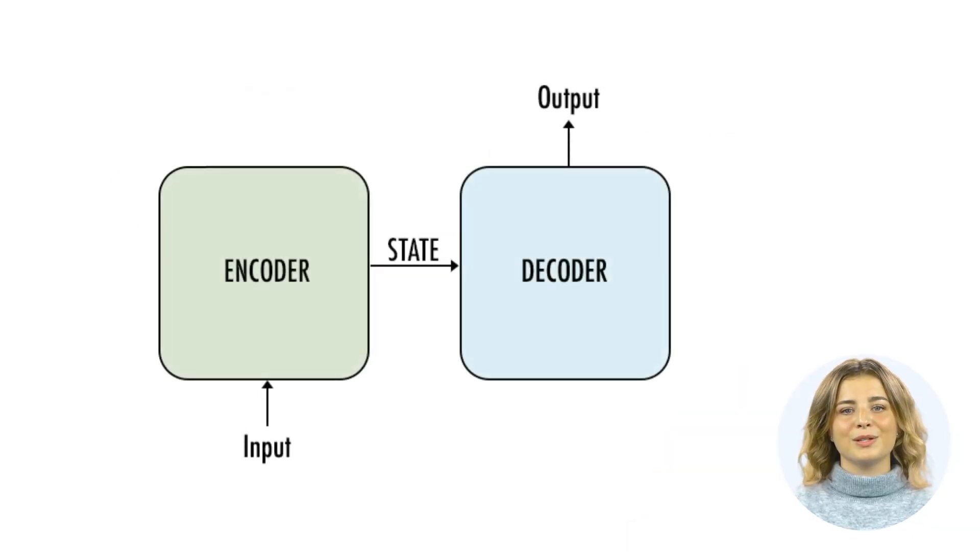The core of sequence-to-sequence learning is a structure known as an encoder-decoder model. As the name suggests, it has two main components: an encoder and a decoder. Both of these components are recurrent neural networks, RNNs, which are a type of neural network designed to handle sequential data by maintaining an internal state that captures the information from all previous steps in the sequence.